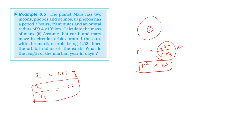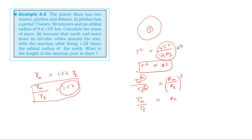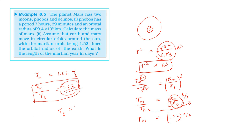Applying Kepler's third law: T_Mars² / T_Earth² = (R_Mars / R_Earth)³. Taking the square root: T_Mars = T_Earth × (R_Mars / R_Earth)^(3/2). The time taken by Earth to complete one rotation around the Sun is 1 year, which is 365 days. Substituting R_Mars / R_Earth = 1.52.